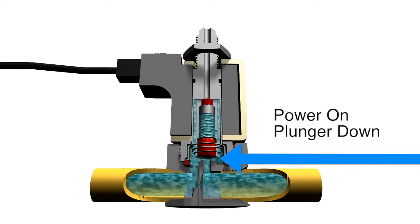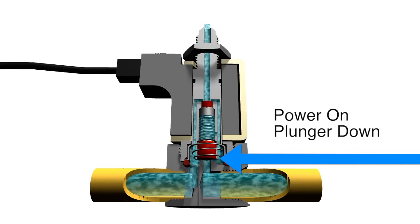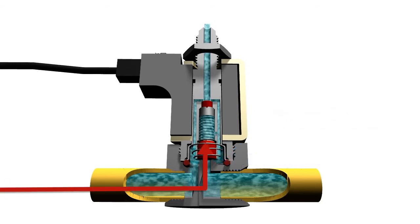When the coil is energized, the plunger is down, sealing off the body orifice and opening up the stop orifice, allowing flow through the valve from the cavity port and out the stop port.